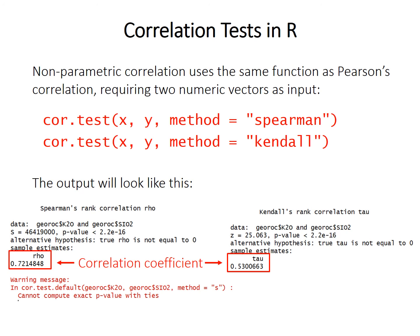Note that even using the same data, you get different numeric values for rho and tau because they are calculated in different ways — they are not directly comparable to each other. You can compare one tau to another tau, or one rho to another rho, but never compare Spearman's rho to Kendall's tau directly, as they are very different measures. You don't need to report the S statistic given for Spearman's or the z for Kendall's, but you should always report the correlation coefficient and the p-value.